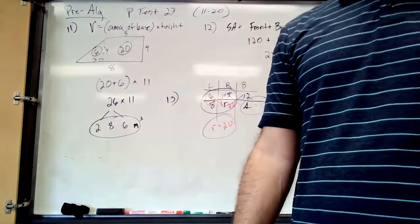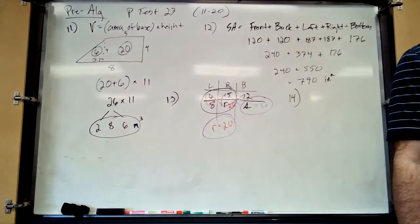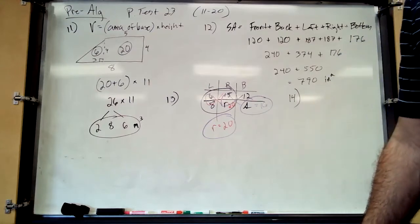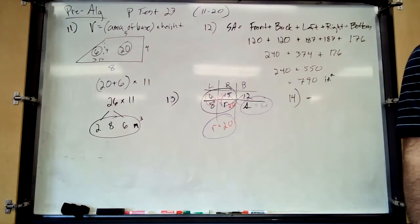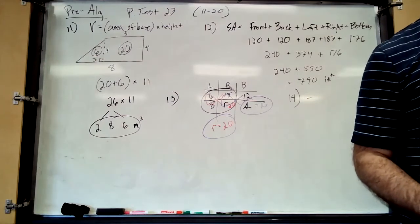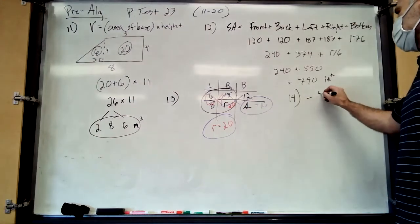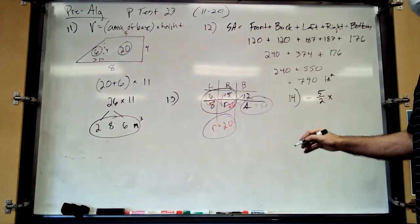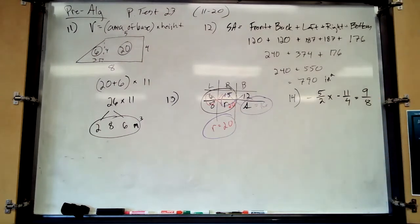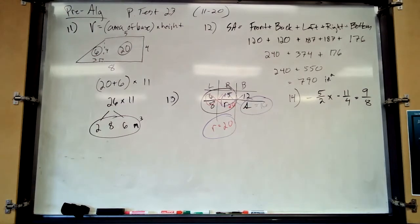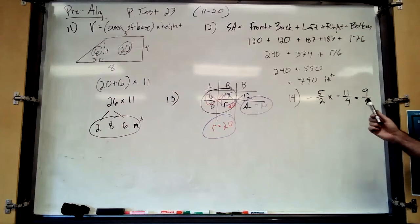Now we've got an equation that looks more complicated because of fractions, but it's still a two-step equation. First, mixed numbers are messy, so let's convert everything to improper fractions. We get negative five-halves x minus eleven-fourths equals nine-eighths. Now identify the two things you need to get rid of on the left side.